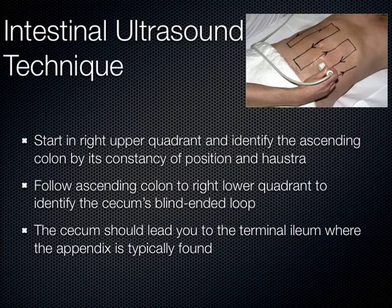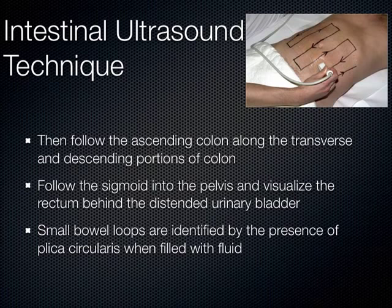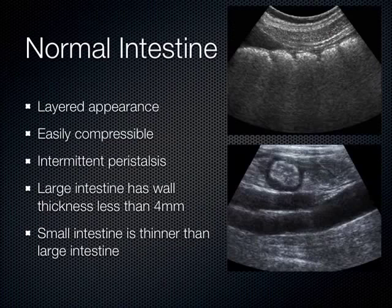Once you're at the appendix, you can go back up the ascending colon and then across the transverse and down the descending portion of the colon. You'll see the sigmoid down in the pelvis. The rectum is very easy to see almost always — it's right behind a nice fluid-filled bladder. To differentiate small bowel from large bowel is difficult with air-filled loops in normal individuals. But when patients have disease states, you can really make out the plicae circulares.